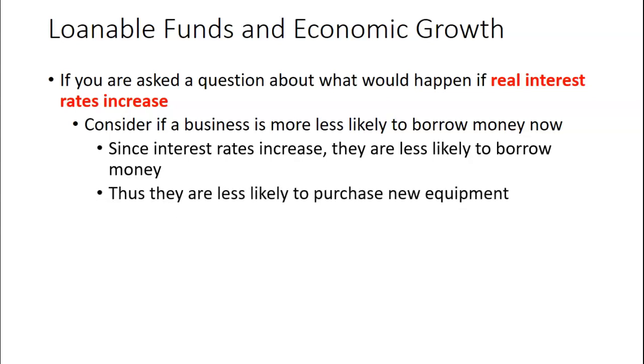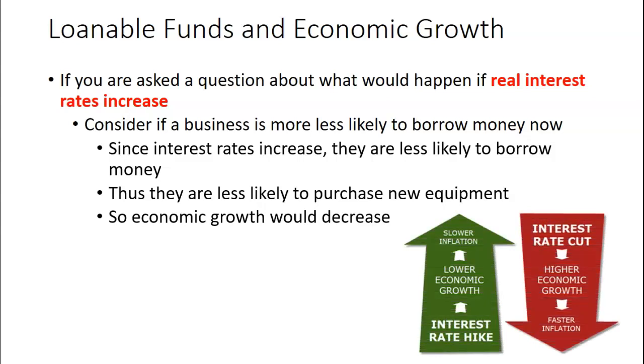If businesses are less likely to borrow money, they're less likely to get the new equipment. If they don't have the new equipment, the economic growth is going to start to slow down. So typically higher interest rates are used to try and cool down the economy. We'll talk about that when we start talking about the banking system in order to slow down inflation. And a decrease in interest rates are usually trying to stimulate the economy and we can see that reflected in the loanable funds graph.